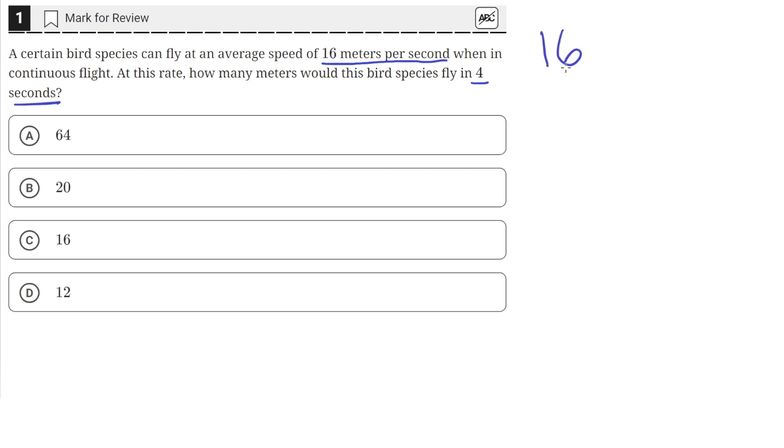So the bird species flies 16 meters per second. So for every second that it flies, it goes a distance of 16 meters.